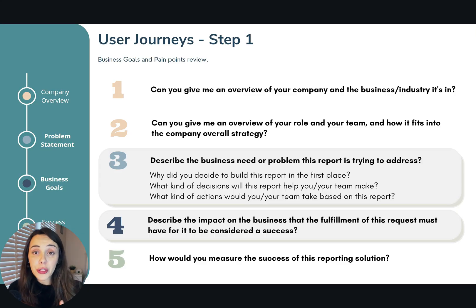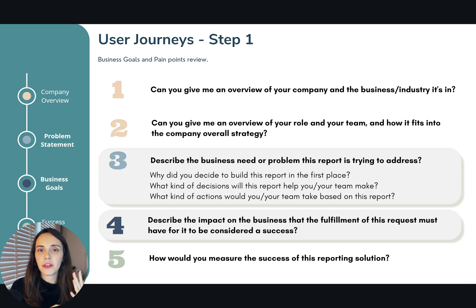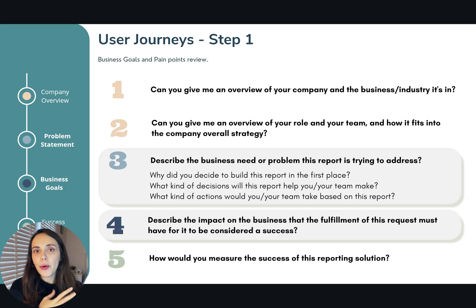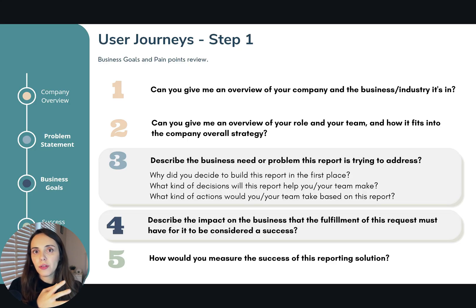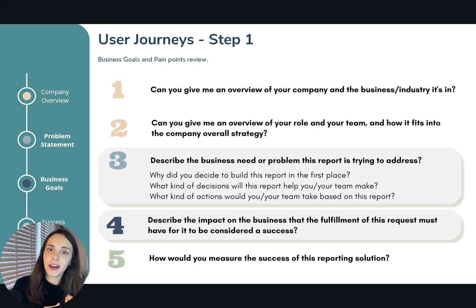As you can see here, the first two questions are related to the company overview, which is also valuable information when defining user journeys. The second question on this page is related to the problem statement, where we ask things like: describe the business need or problem that this report is trying to address, what kind of decisions will you take based on this report, and what kind of actions will it drive? Previously we asked our stakeholders why they decided to build this report and what actions they are planning to take from it.